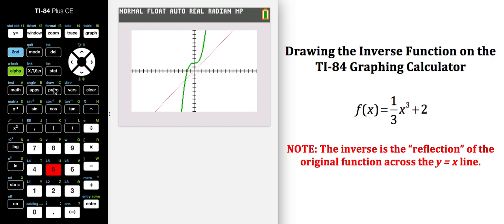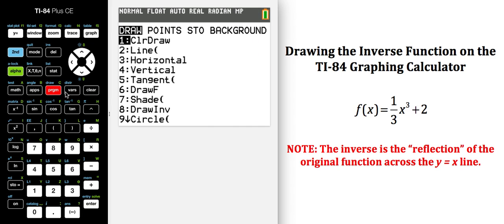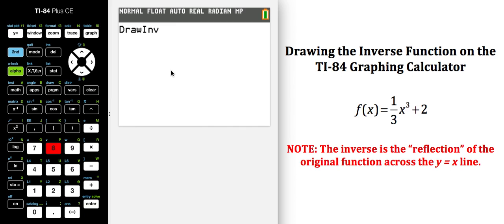Now I'm going to choose the draw feature of the calculator to draw the inverse. So I will do second draw. From there a menu comes up and it is number eight draw inverse. So I'm going to select eight and that takes me out to right here with a blinking cursor.